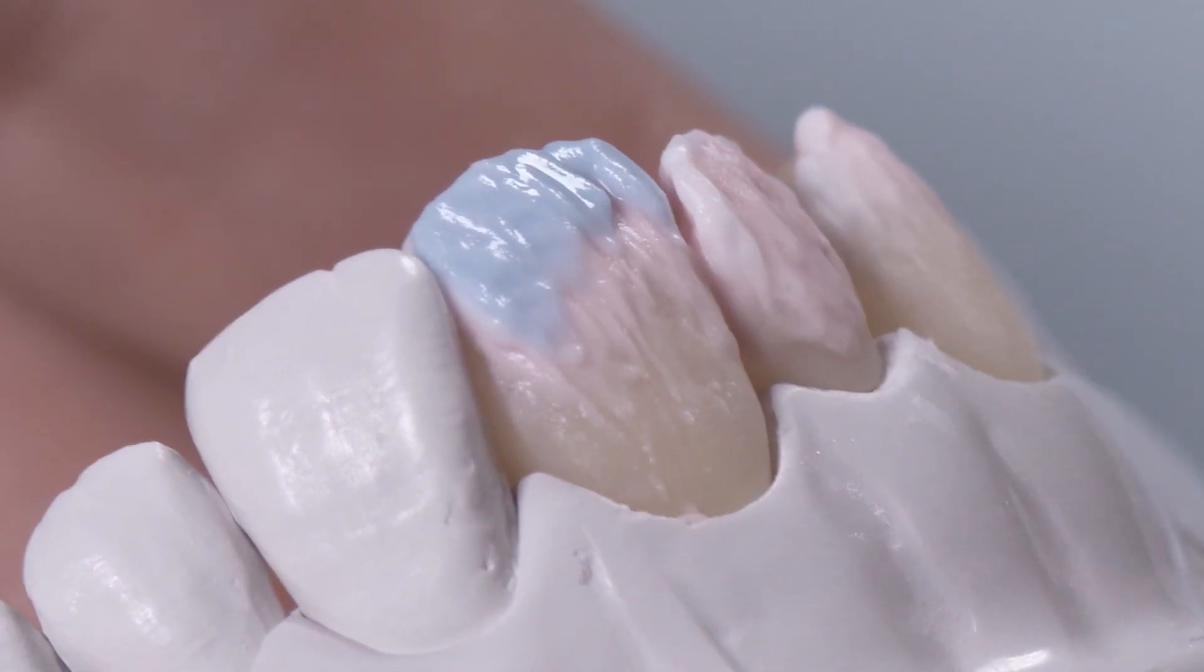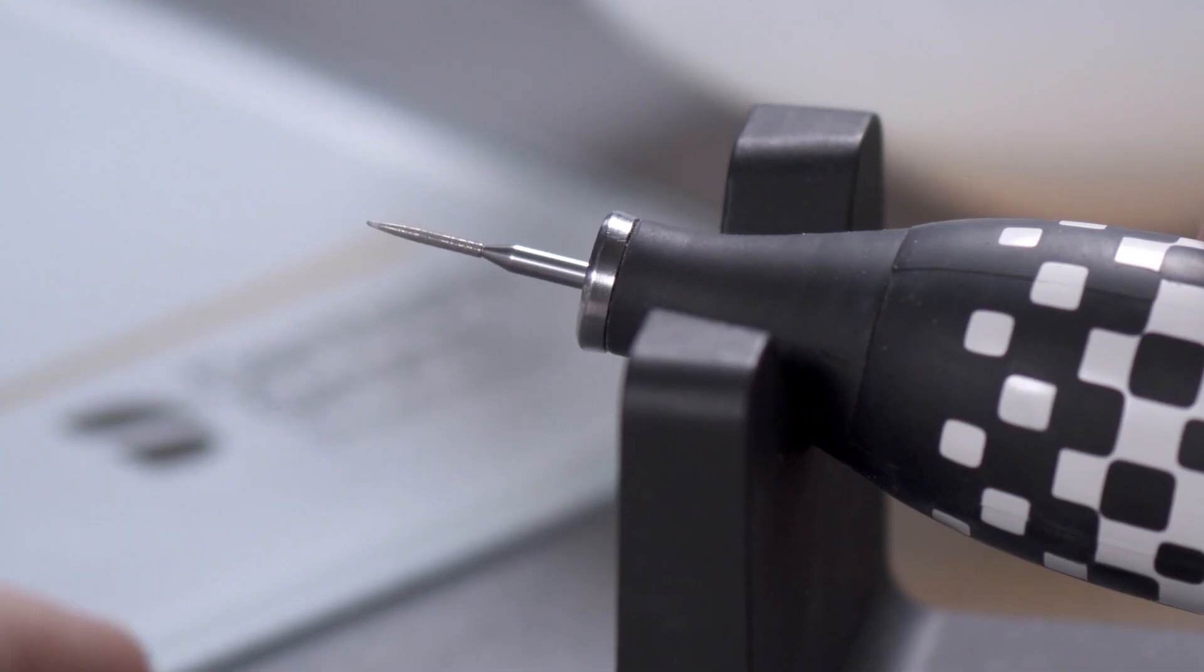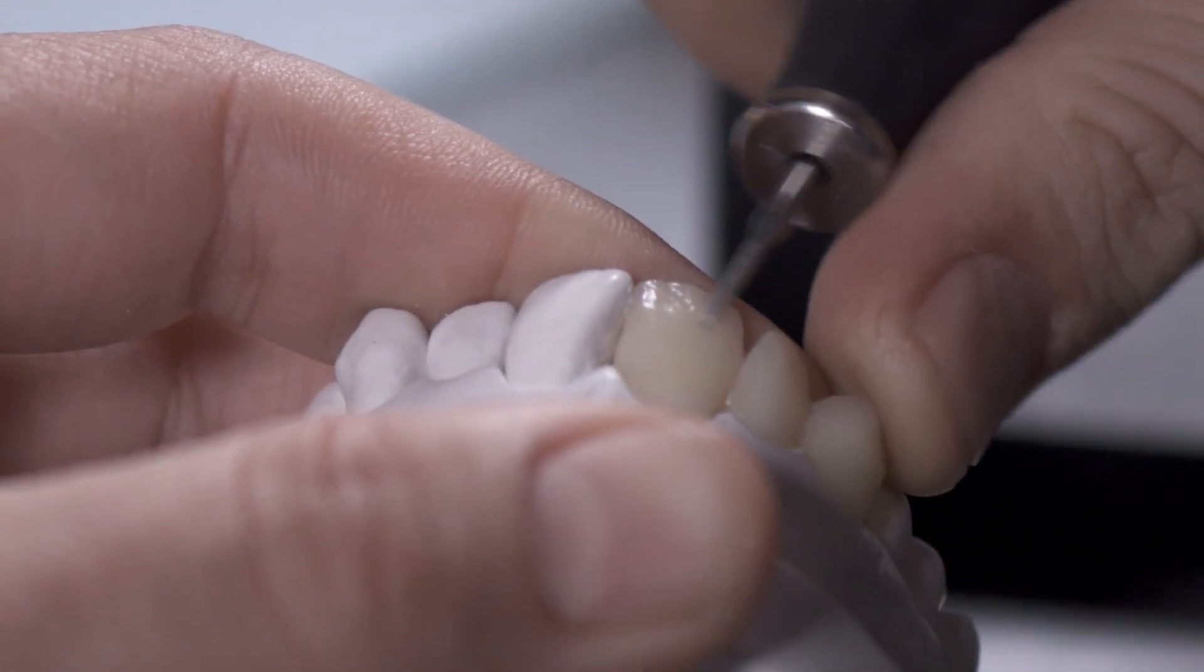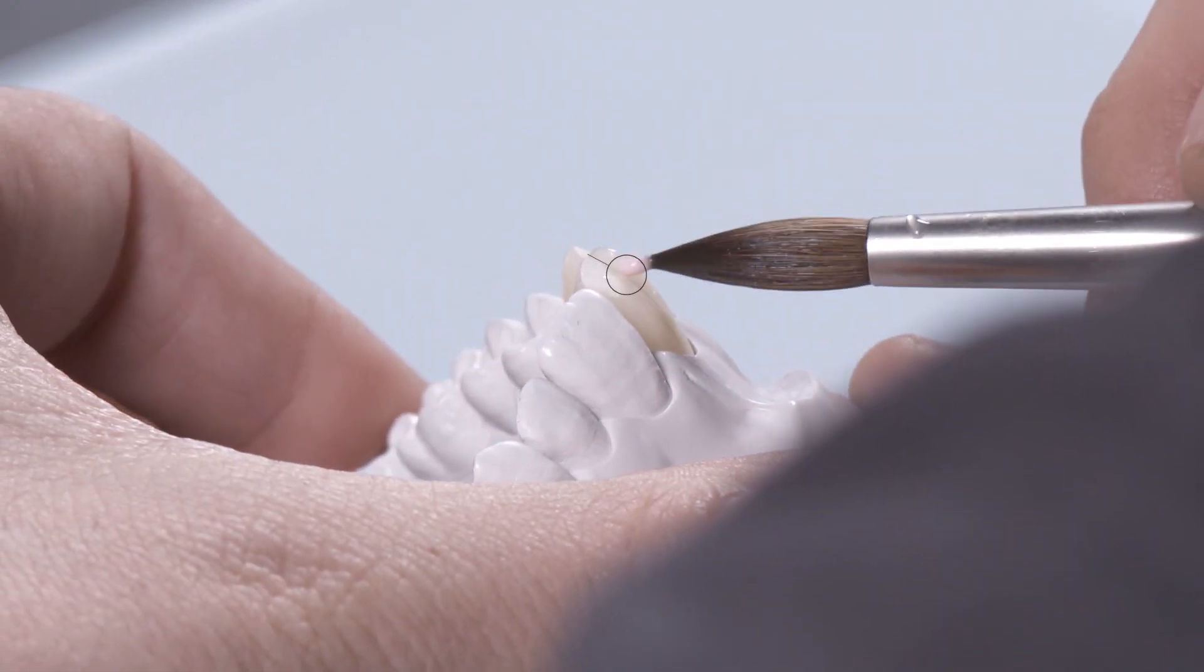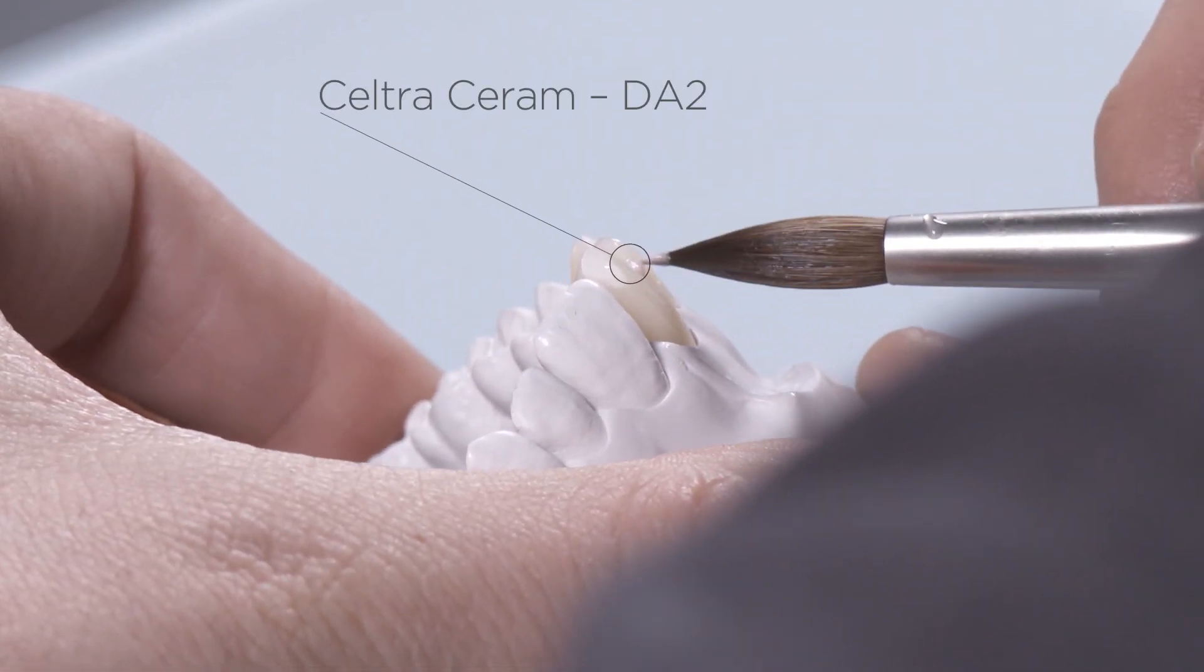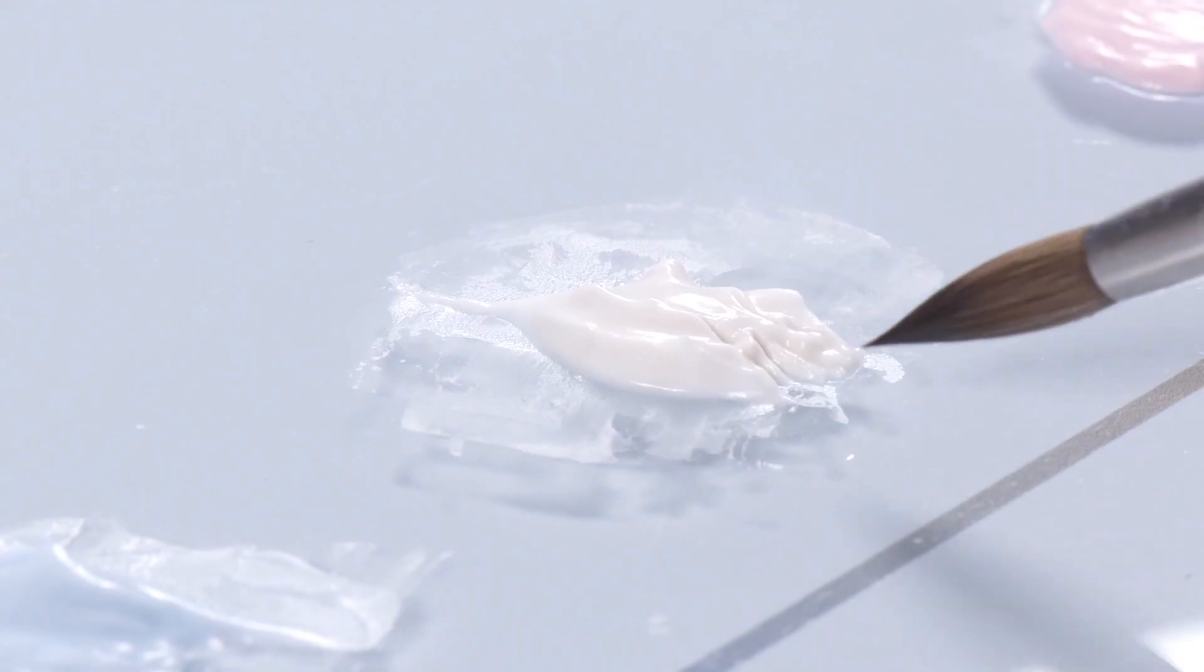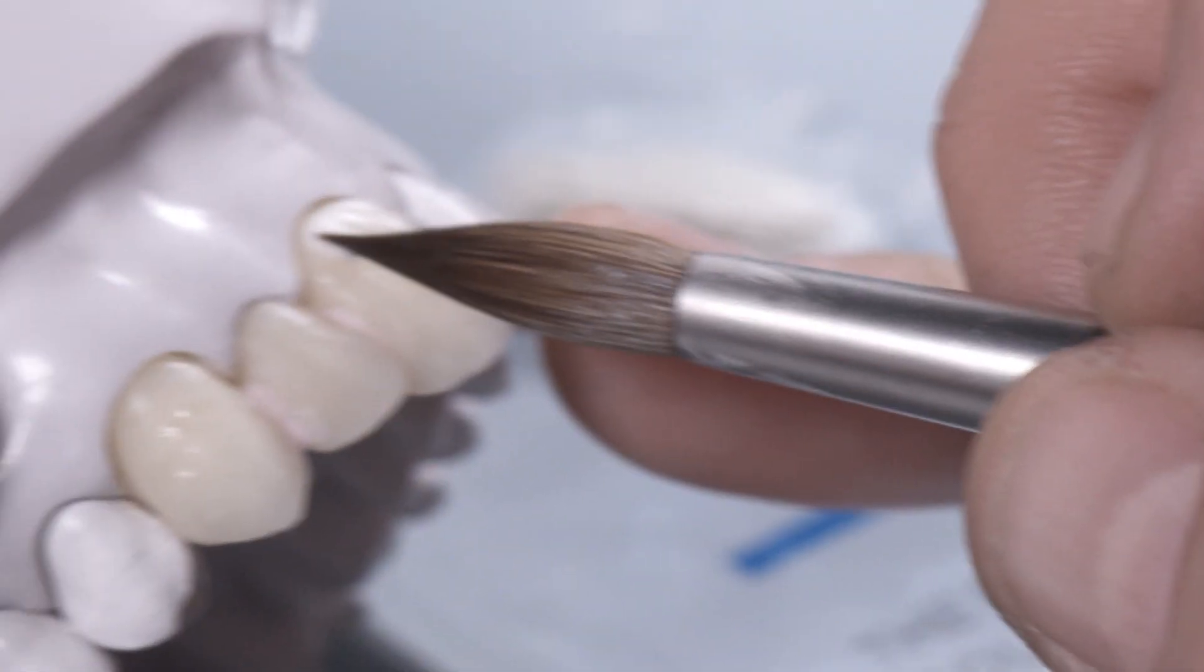After the ceramic firing, finish the shape and prepare the restoration for the second layer. Close the interdental spaces both labially and palatally with Dentin A2. On the cervical aspect, we use a mixture of Enamel Effect EE3 and Enamel Opal EO4.